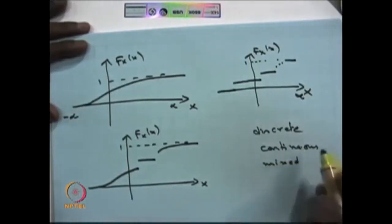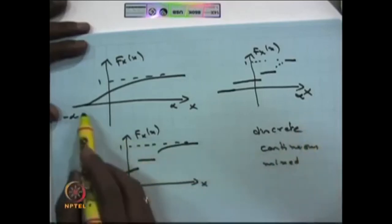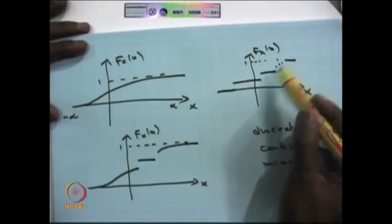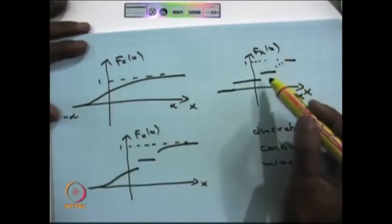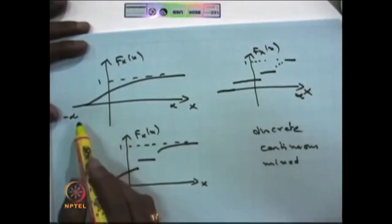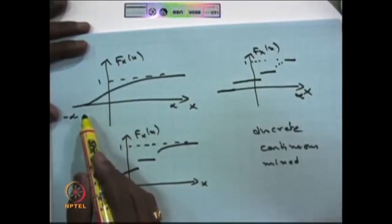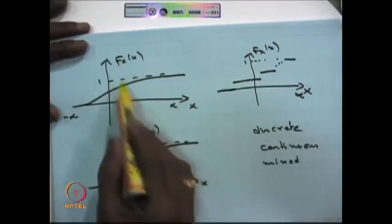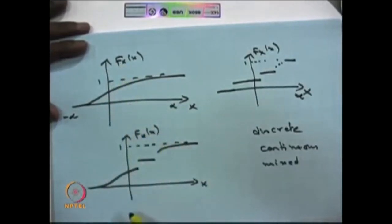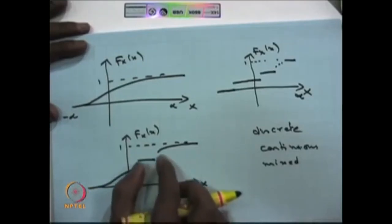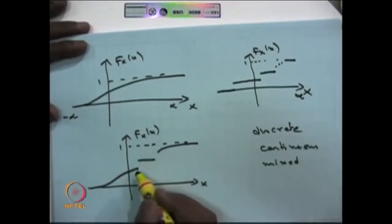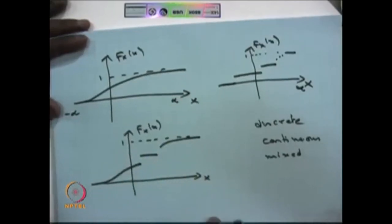A random variable is called a discrete random variable if the CDF has countably finite or countably infinite jumps. If a random variable has a CDF that is continuous from minus infinity to infinity, it is called a continuous random variable. If the CDF is continuous over some intervals and has countably finite or countably infinite jumps in others, the random variable is called a mixed-type random variable.